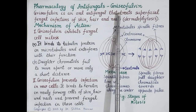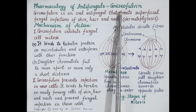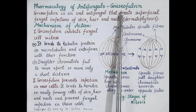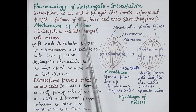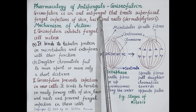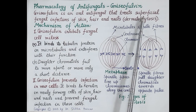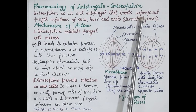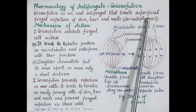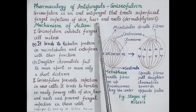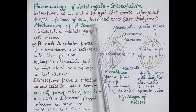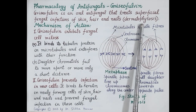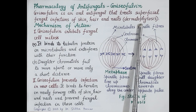In this video we are going to study pharmacology of the antifungal drug griseofulvin. Griseofulvin belongs to the heterocyclic benzofuran class of antifungal drugs. It is an oral antifungal, used only orally. Fungal infections are of two types: superficial and systemic. Systemic fungal infections affect internal organs like lungs, heart, and bones. Griseofulvin is used to treat superficial fungal infections of skin, hair, and nails, termed dermatophytosis or tinea infections.